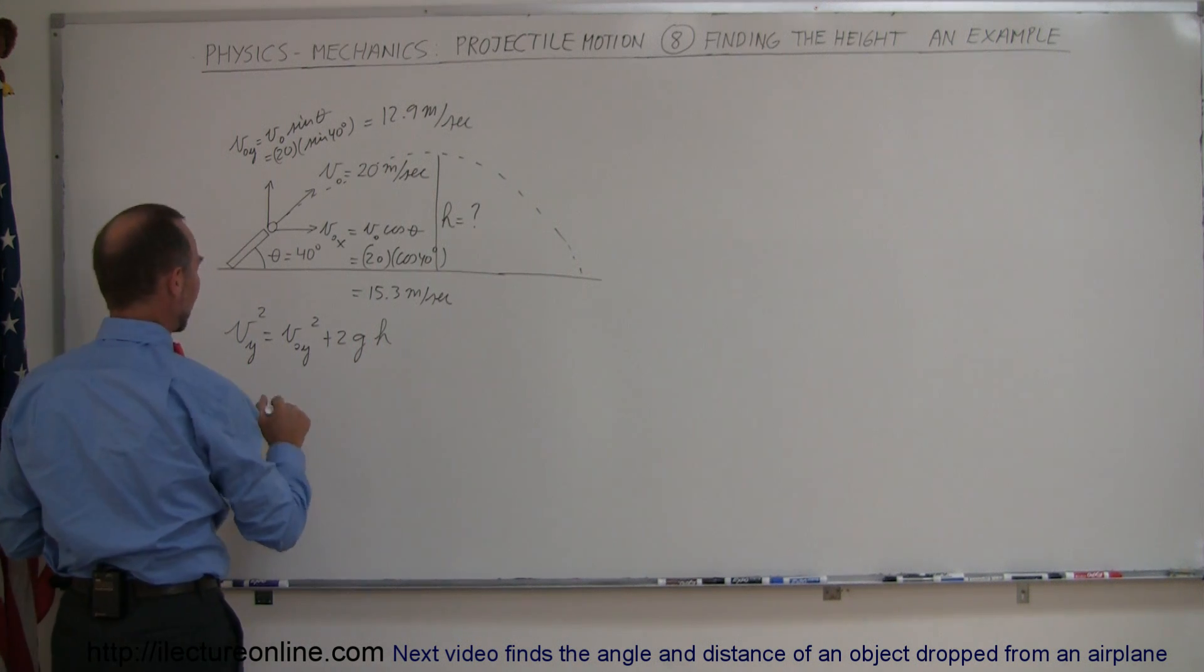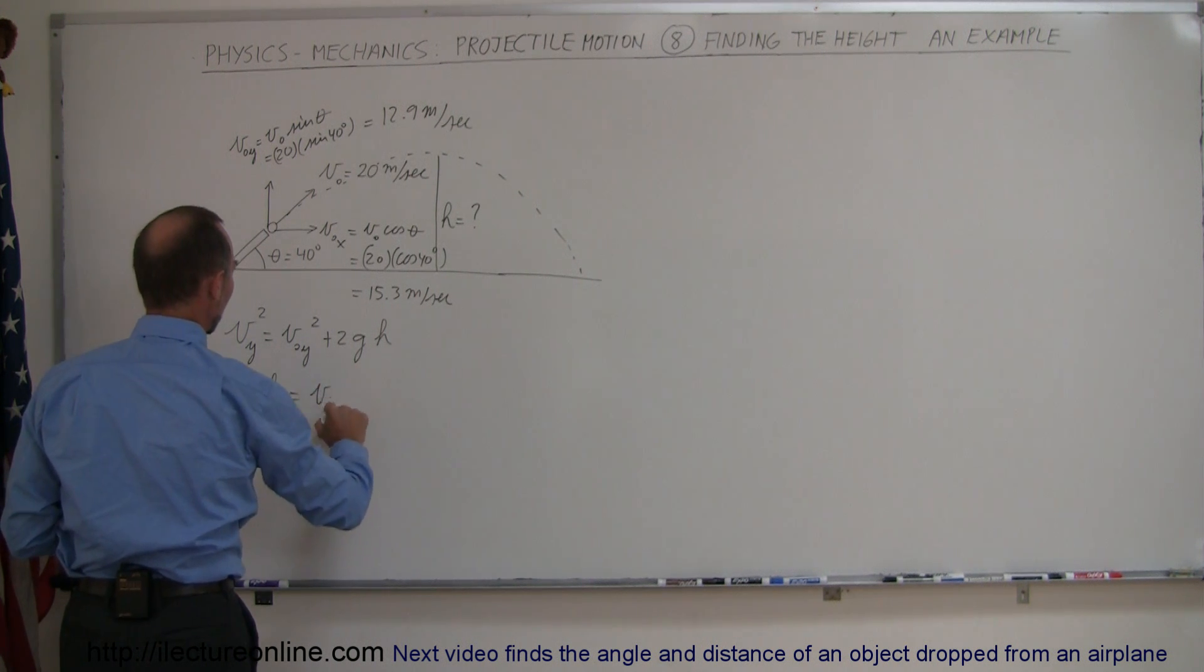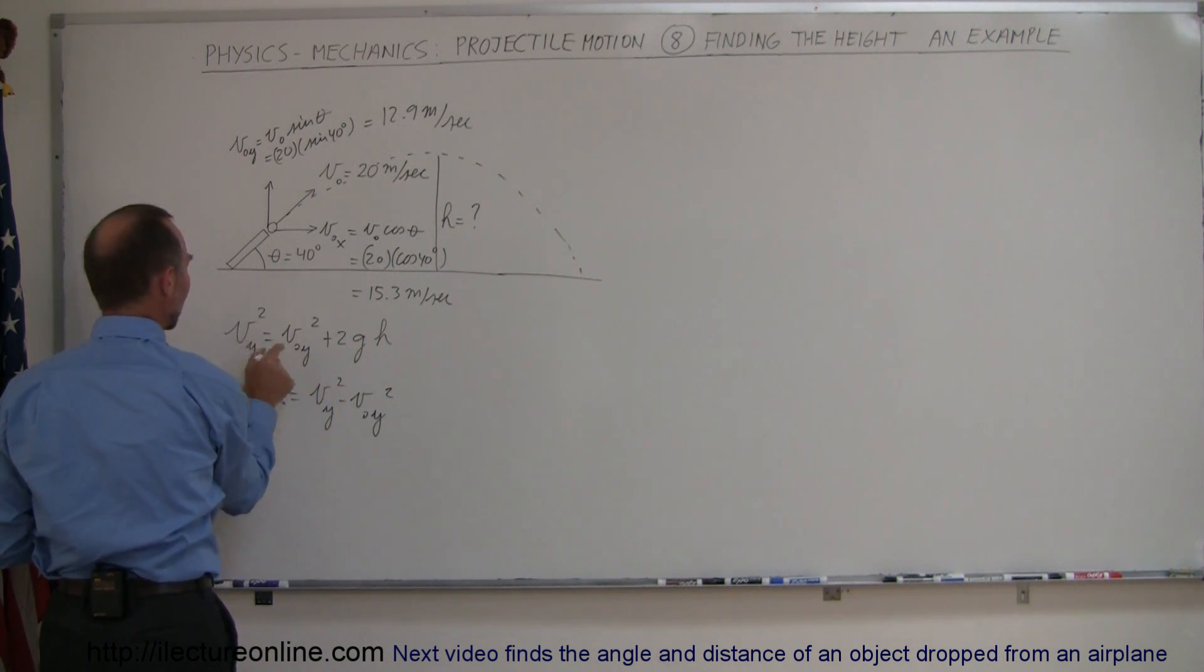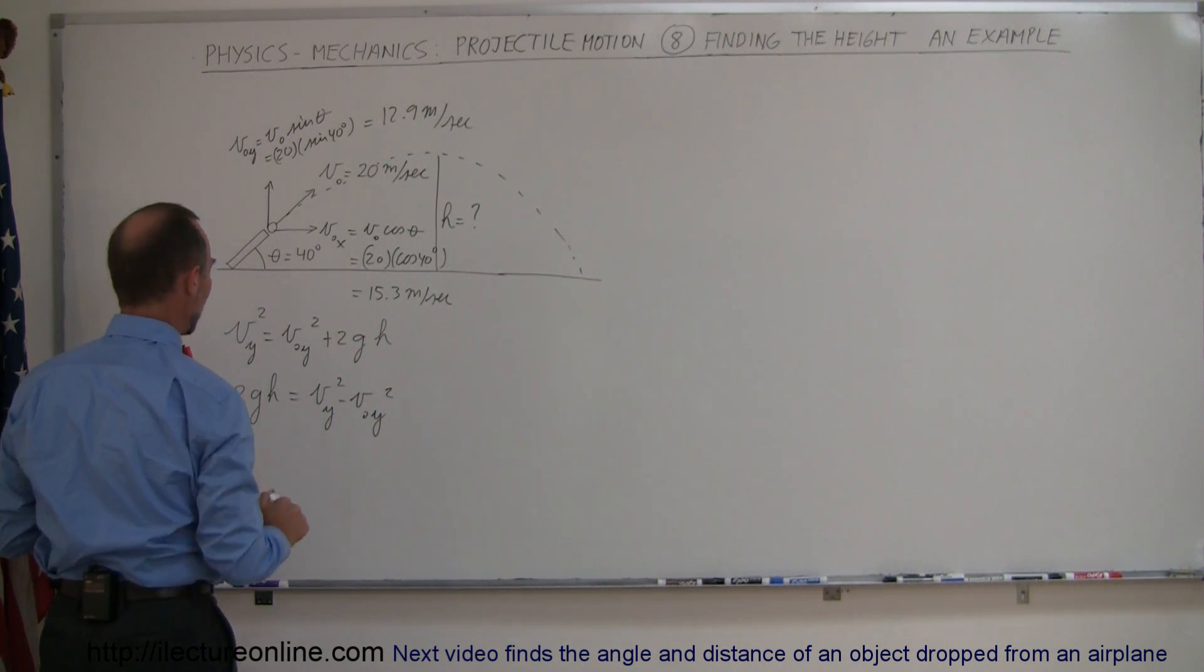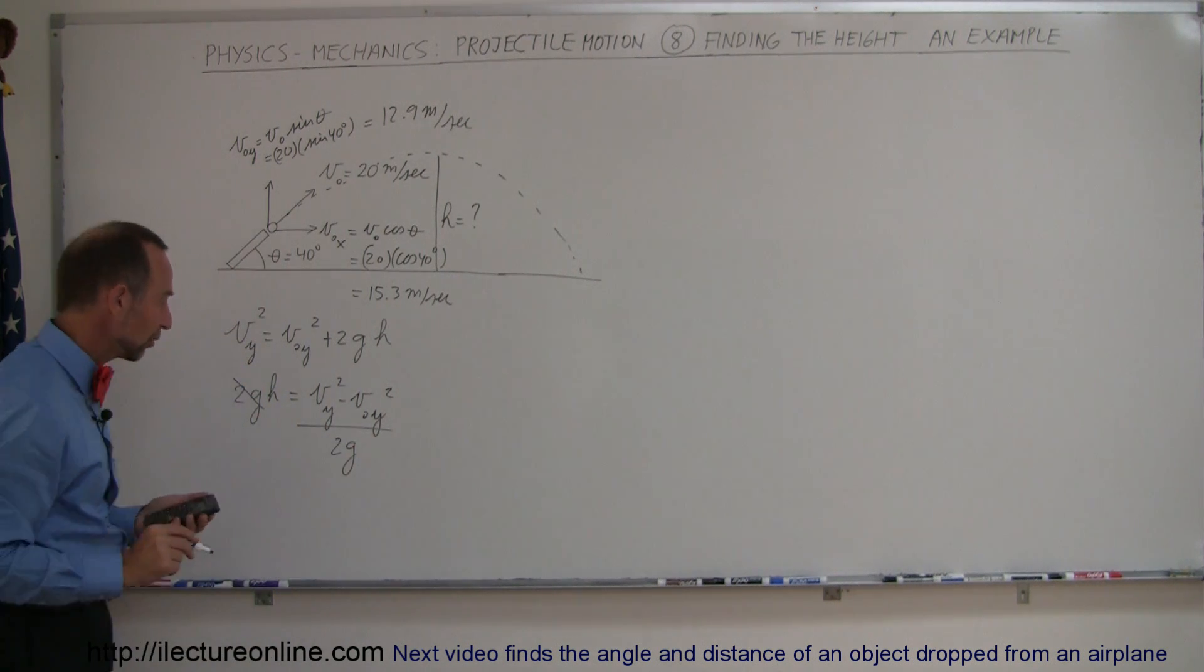I can solve this for h by saying that 2gh is equal to v sub y squared minus v sub not y squared. Notice I moved this to the other side, made it negative, turned the equation around and then divide both sides by 2g and there it is. There's the equation.